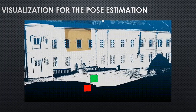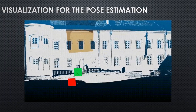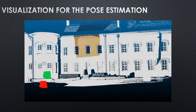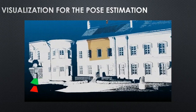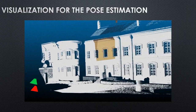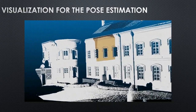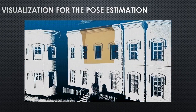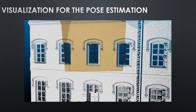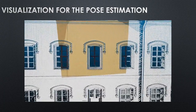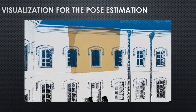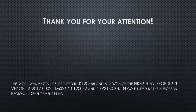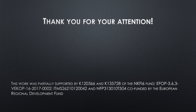Here you can see a short visualization of the pose estimation. The green camera is the ground-truth camera, and the red camera is the query camera. Thank you for your attention!